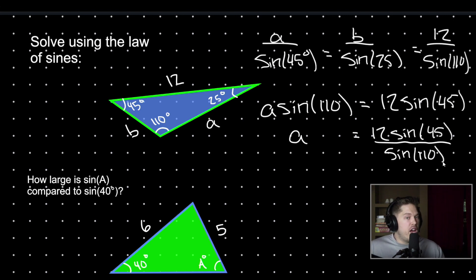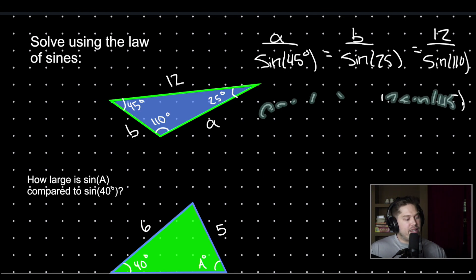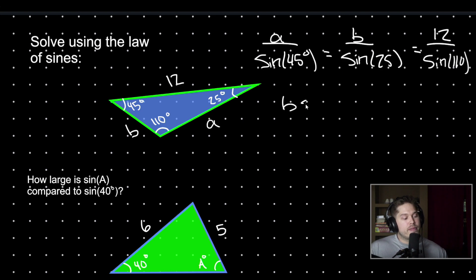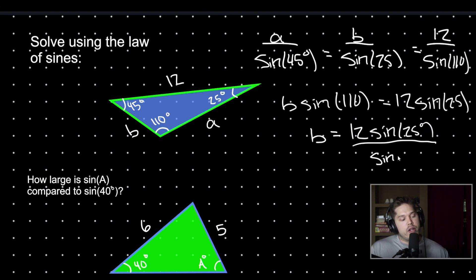This is something you can just plug into your calculator and get a value. And then how could we solve for B? We can solve for B by the exact same process — we cross multiply: B times sine of 110 equals 12 times sine of 25 degrees. Then we divide by sine of 110 to get that B equals 12 times sine of 25 degrees over the sine of 110. So we're able to solve for the components of the triangle a lot quicker using the law of sines.